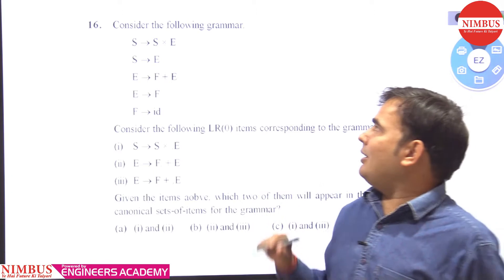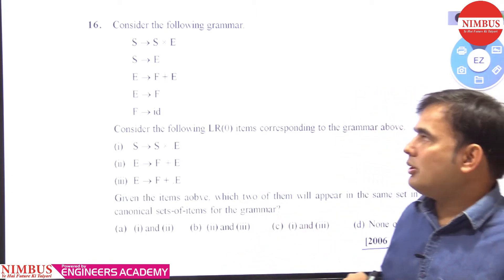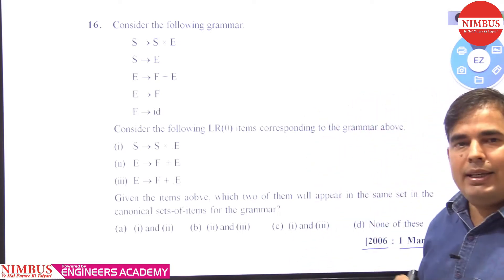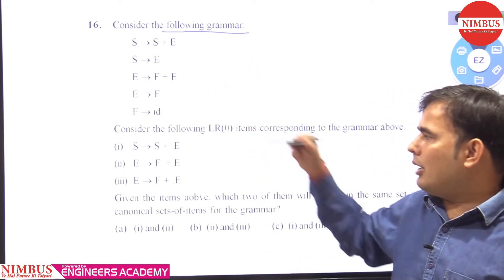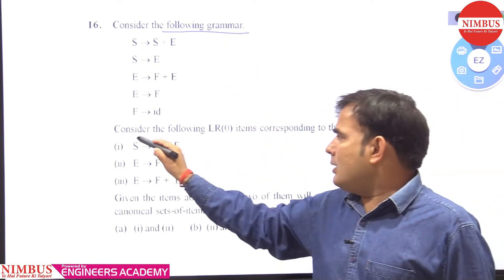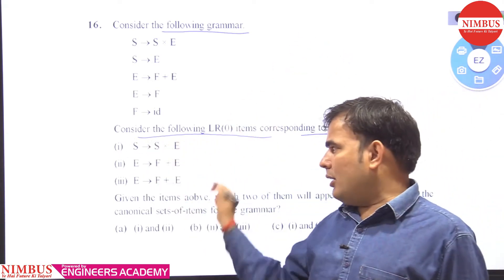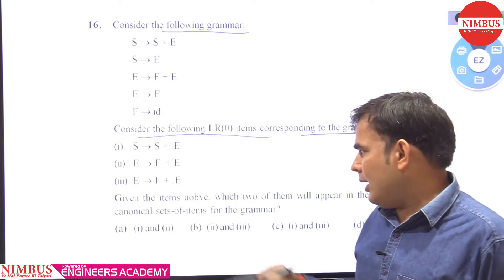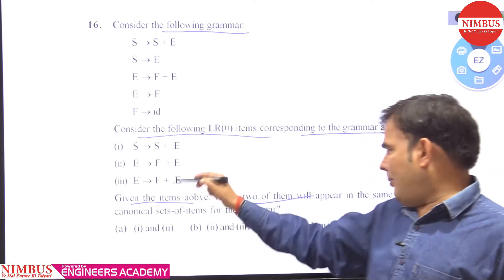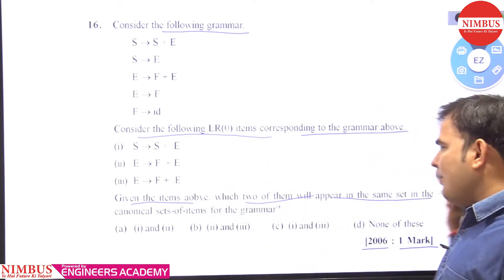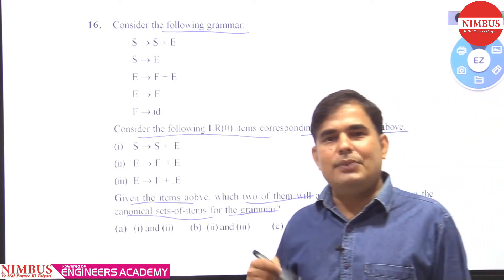Hello friends. This question was asked in GATE 2006 for 1 mark. Let's see what it is saying. Consider the following grammar — this is the given grammar. Consider the following LR0 items corresponding to the grammar above — these are the LR0 items or canonical set items. Given the items above, which two of them will appear in the same set in the canonical set of items for the grammar?